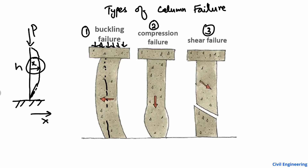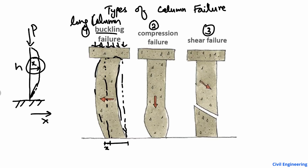From its original position, there is a small deformation X. This lateral deformation due to loading creates a failure which we call buckling failure. This mostly happens in long columns — it is mostly occurring in long types of columns.